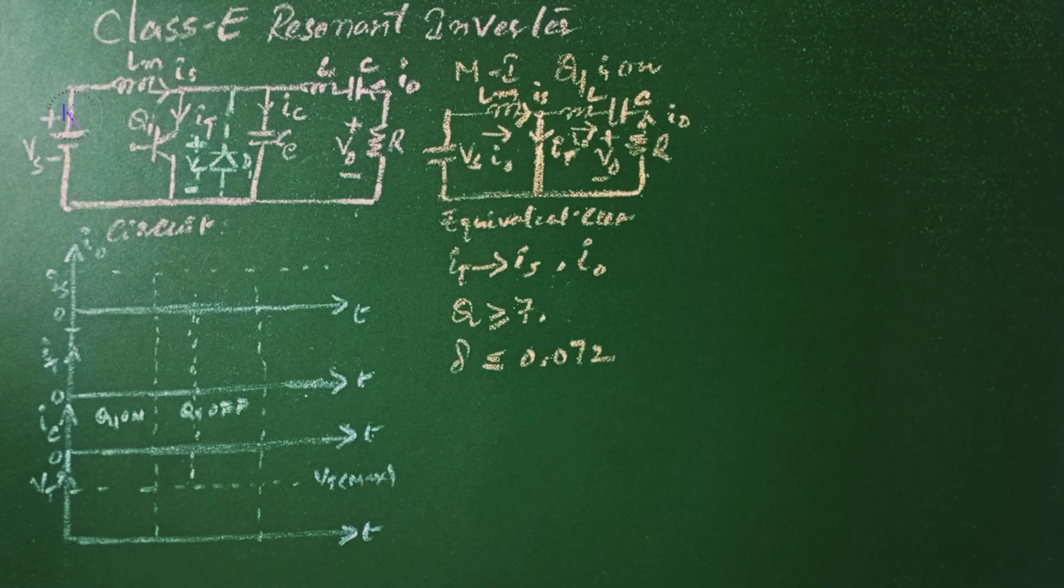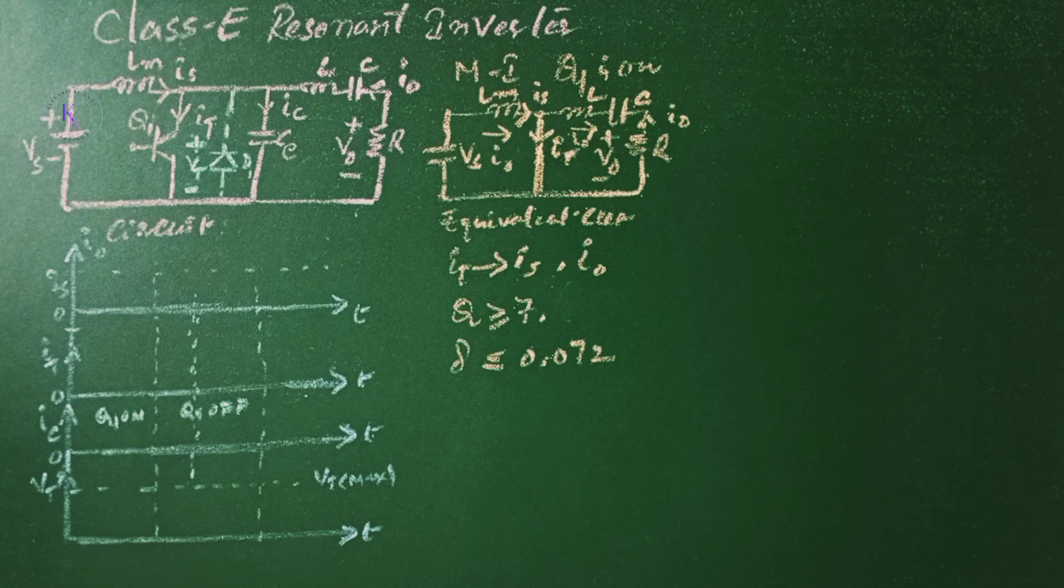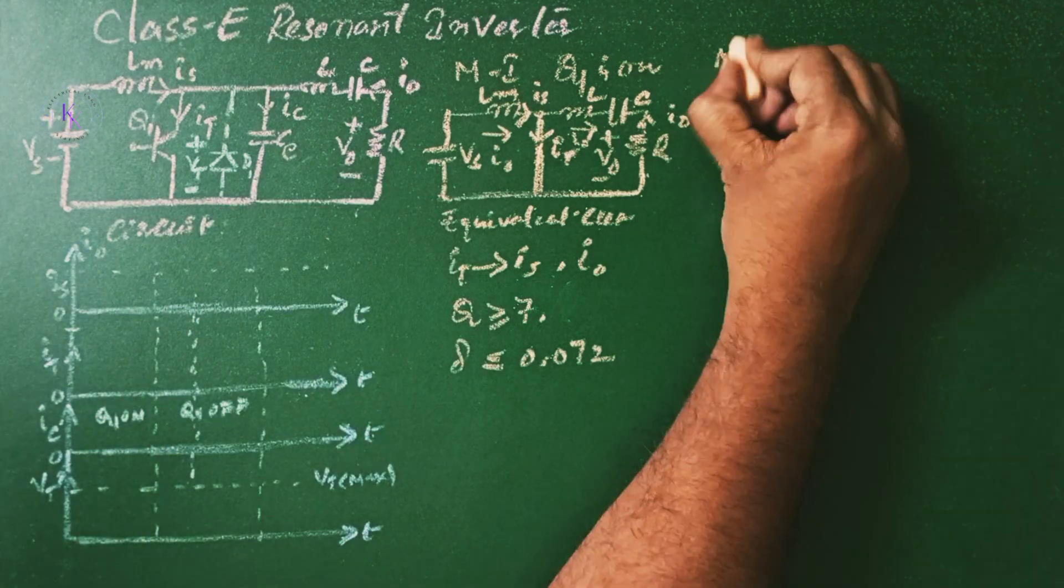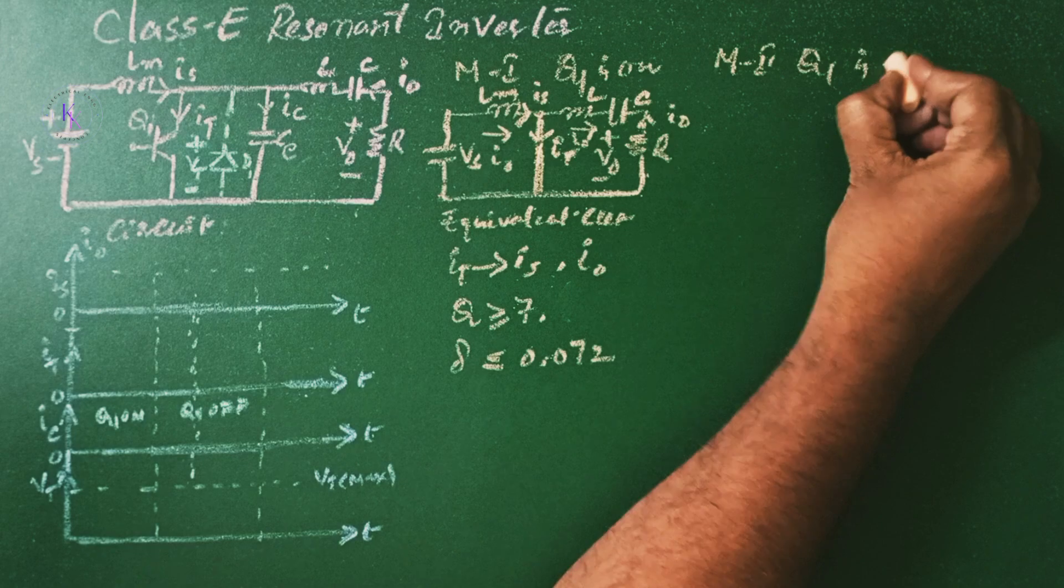The switch is turned off at zero voltage. When the switch is turned off, its current is immediately diverted through the capacitor CE in the main circuit. Mode 2 is when Q1 is off.